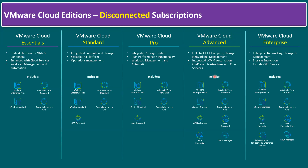VMware Cloud Enterprise in disconnected mode upgrades to enterprise-grade products: NSX Enterprise Plus and Aria Operations for Network Enterprise are the additional add-ons, enabling customers to integrate with external public clouds as well. So VMware Cloud Editions are divided into five types: Essential, Standard, Pro, Advanced, and Enterprise.